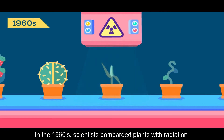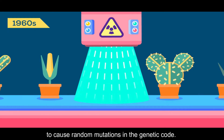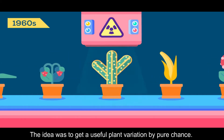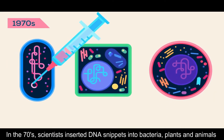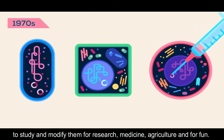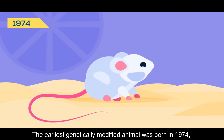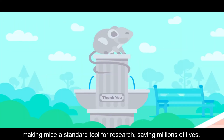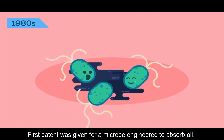As soon as DNA was discovered, people tried to tinker with it. In the 1960s, scientists bombarded plants with radiation to cause random mutations in the genetic code — the idea was to get useful plant variations by pure chance, and sometimes it actually worked. In the 1970s, scientists inserted DNA snippets into bacteria, plants, and animals to study and modify them for research, medicines, and agriculture. The earliest genetically modified animal was born in 1974, making mice a standard tool for research, saving millions of lives. In the 1980s, the first patent was given for a microorganism engineered to absorb oil.